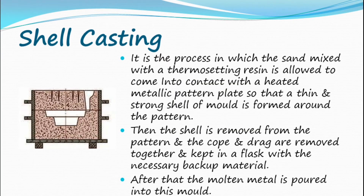Shell casting: it is a process in which sand mixed with a thermosetting resin is allowed to come into contact with a heated metallic pattern plate so that a thin and strong shell of mold is formed around the pattern. Then the shell is removed from the pattern, and the cope and drag are put together and kept in a flask with the necessary backup material. After that, the molten metal is poured into this mold.